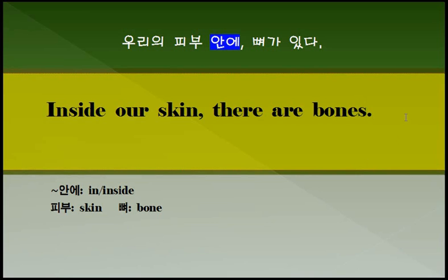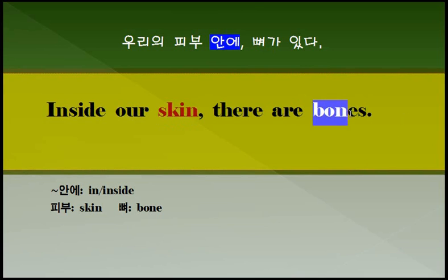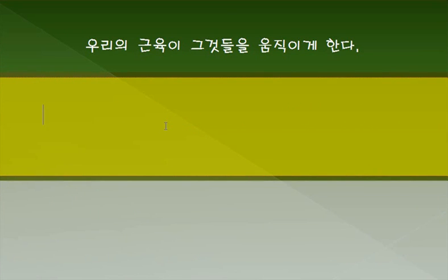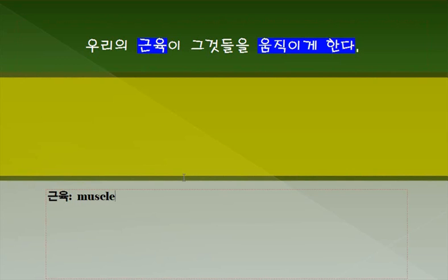이제 올바른 표현이 되었습니다. 다시 한 번 확인하세요. 피부는 skin이라고 하는 표현을 쓰고 있습니다. 여러분들이 잘 알고 있으리라고 생각됩니다. 뼈는 bone. 주요 단어 다시 한 번 확인해 두시기 바랍니다. 두 번째 문장입니다. 우리의 근육이 그것들을 움직이게 한다. 우리의 근육이 움직이게 한다. 근육을 영어로 뭐라 그럽니까? muscle. 그래서 우리의 근육, 한두 개의 근육이 아니죠. 여러 개의 근육입니다. 복수라는 것이 좋습니다. our muscles.